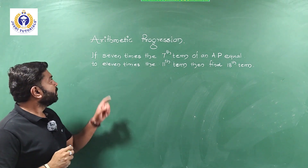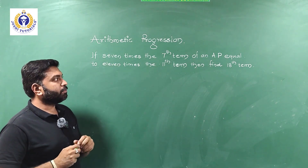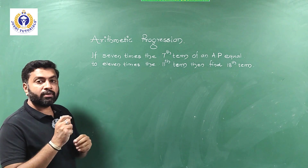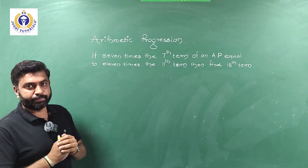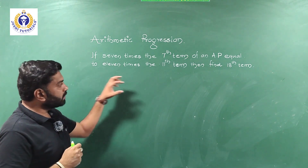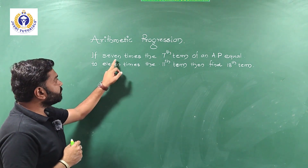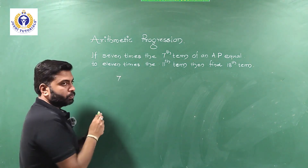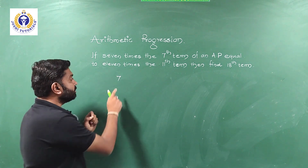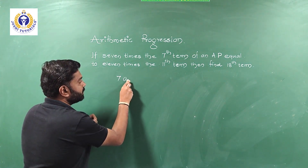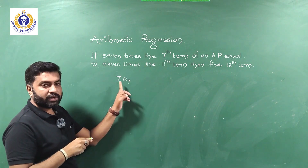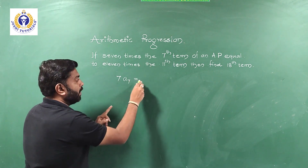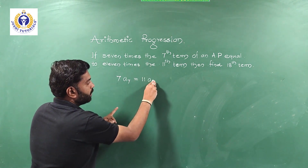Second question: If 7 times the 7th term of an AP equals 11 times the 11th term, then find the 18th term. The given equation is 7×a₇ = 11×a₁₁.